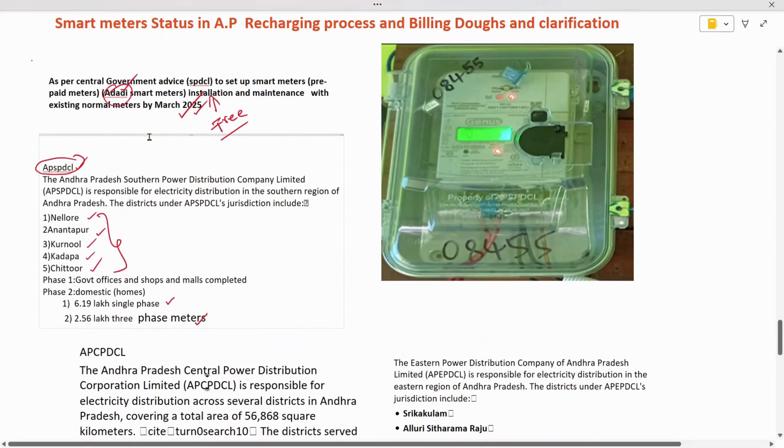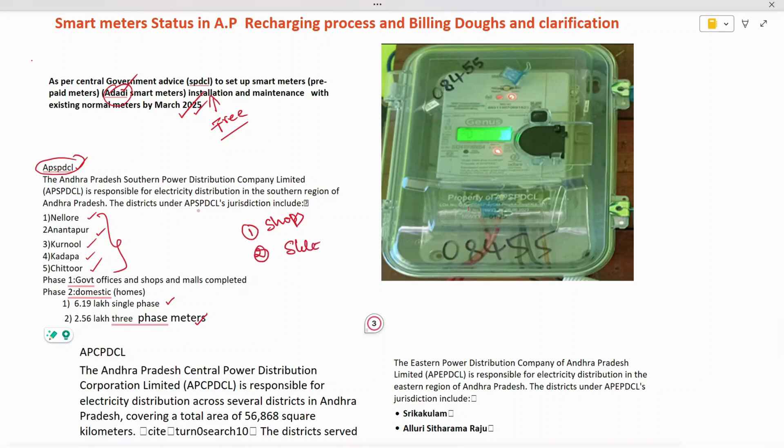For the first phase, the government is focusing on shops first. Installation has to be done for commercial shops first, and second for state government offices. All government offices have already completed installation, and all commercial shops have completed installation. Now we are running with the third phase.